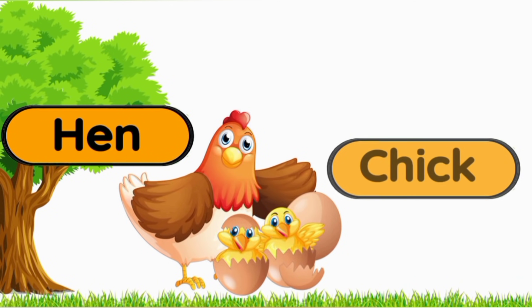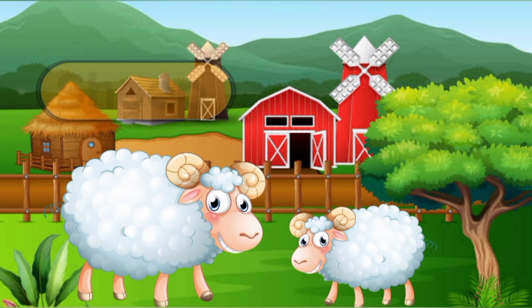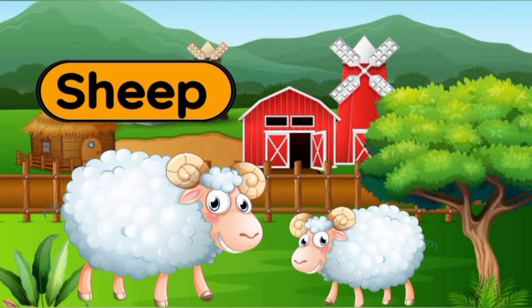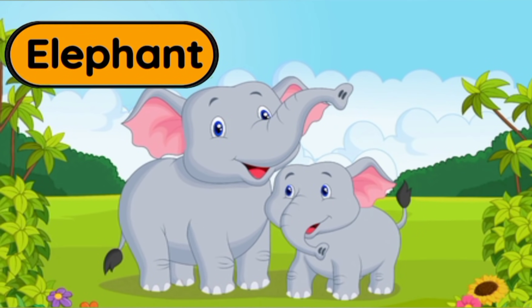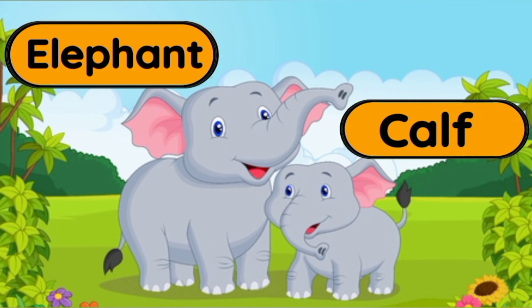Hen — a baby hen is called a chick. Sheep — a baby sheep is called a lamb. Elephant — a baby elephant is called a calf.